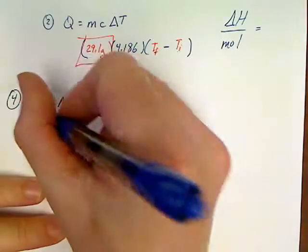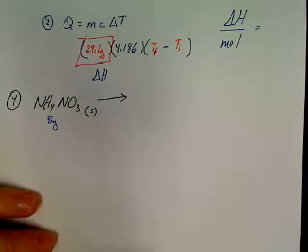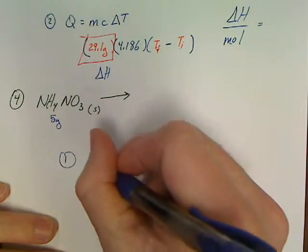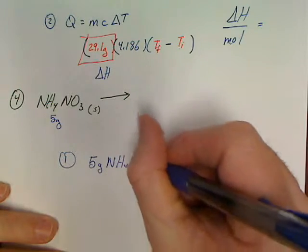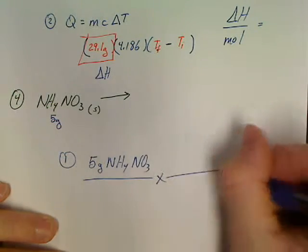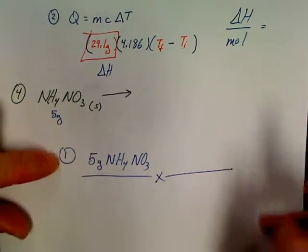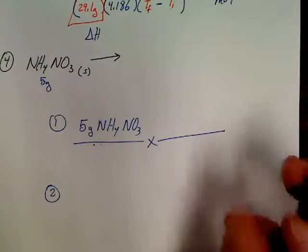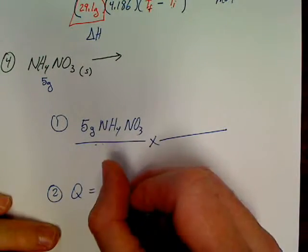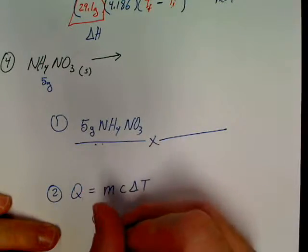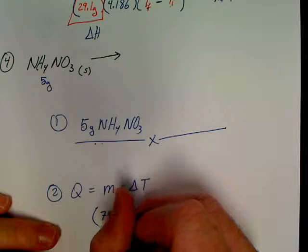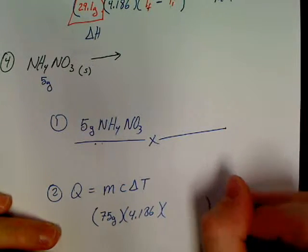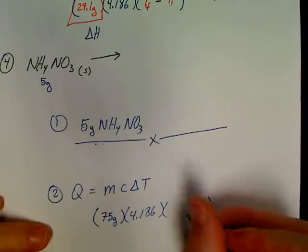Last one, y'all had 5 grams of NH4NO3 and 75 milliliters of water. Step number one, you need to get the 5 grams of NH4NO3, ammonium nitrate, and convert that to moles. Step number two, this was actually the only one that really made great sense to do in the whole lab: MC delta T. Your water should have been 75 grams because you used 75 milliliters, times 4.186 times your two Ts, TF minus TI.